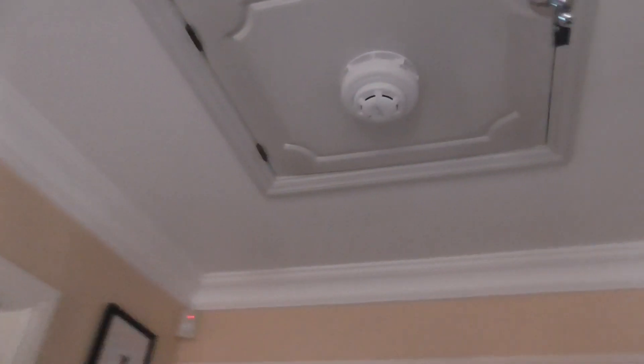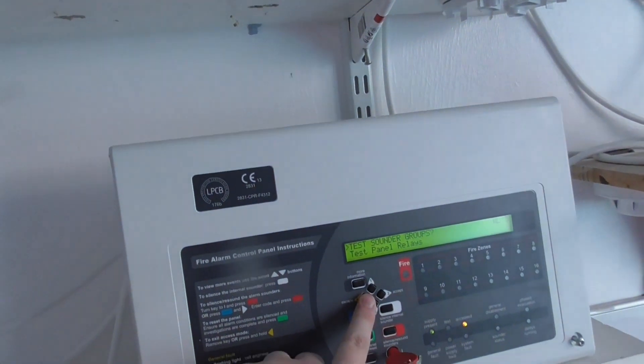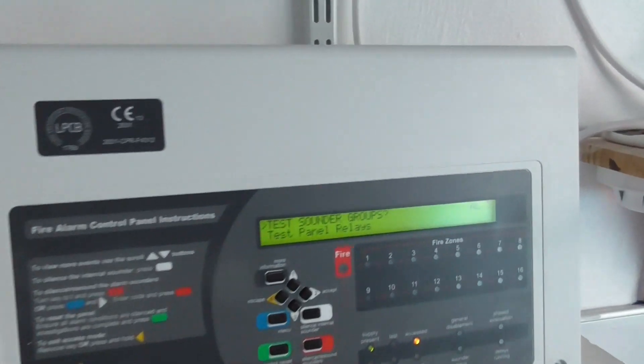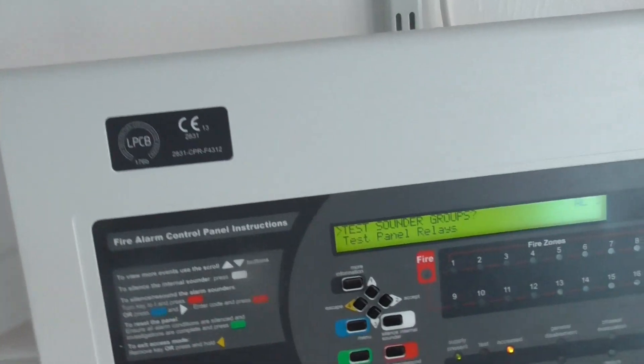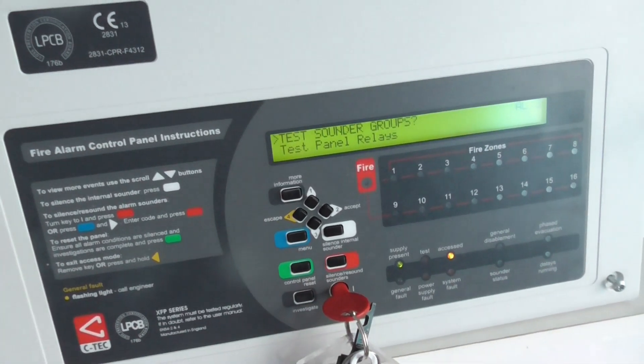There we go. That all worked successfully. I think what we're going to do is we'll test the garage optical detector first, then we'll test the multi-sensor in my bedroom, and then we'll go ahead and finish the test and test the Apollo Intelligent call point to finish the test.